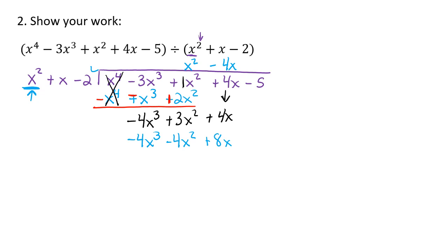Once again just like before, I'm going to switch all my signs. So this will turn to a positive, a positive, and this is now going to be a negative. And now I'm going to start combining terms. The negative 4x to the third plus positive 4x to the third is going to cancel out — that one should always cancel out.